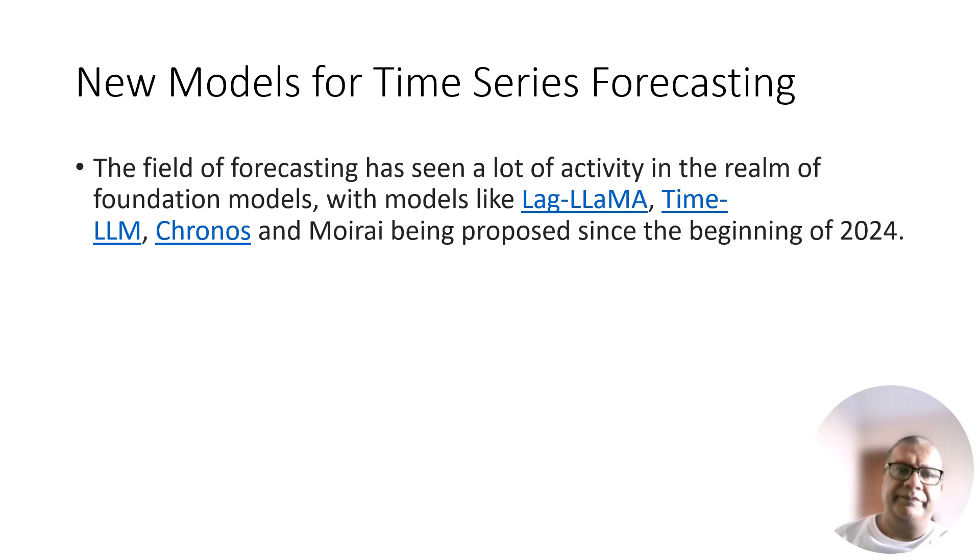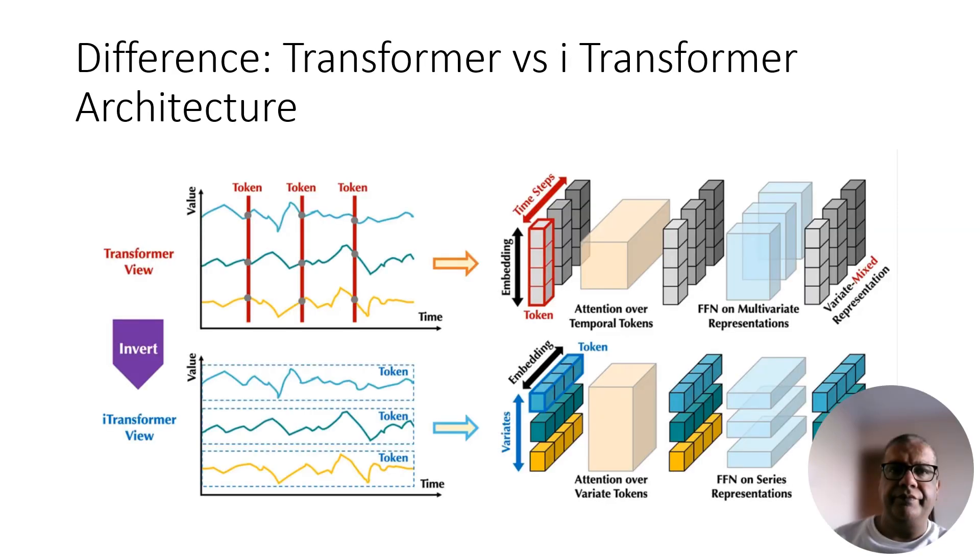What is the difference between a normal vanilla transformer and iTransformer architecture? This picture shows the basic difference. Instead of looking at all features at one time step, it looks at one feature across many time steps. This is done simply by inverting the shape of the input. This way the attention can learn multivariate correlations and the feed-forward network encodes the representation of the whole input sequence.